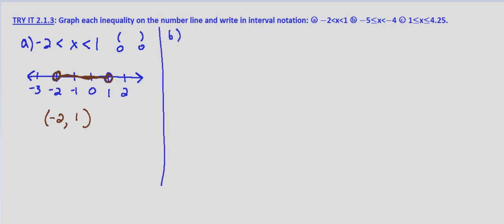Part B, we're given negative 5 is less than or equal to x, which is less than negative 4.